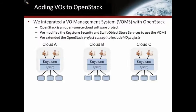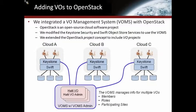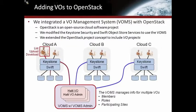Native to OpenStack is the concept of a project, and we extended that concept to include virtual organization projects or VOMS projects. Here we have three different clouds all running independently. What we did is modify Keystone to talk to this external VOMS server, which can manage multiple VOs. For each VO, it keeps track of who the members are, what their roles are, and which sites are participating. When a member in any cloud logs into their local Keystone and logs into a VO project, that Keystone knows to consult the VOMS. If that user is a member of that VO, they get access to all the other sites participating in that VO.